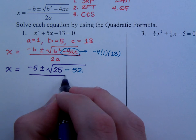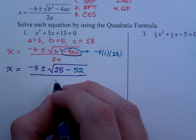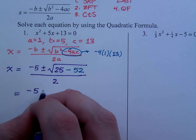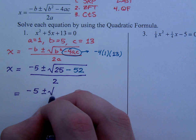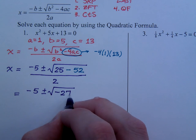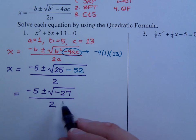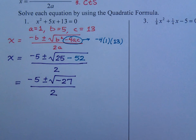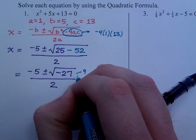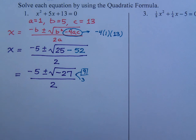And then this is all over 2a, so a is 1, so 2a is 2. And the rest of the quadratic formula is all about simplifying, that's all you can do. 25 minus 52 is negative 27. And then you want to see if you can simplify or reduce this radical. Now, as you look at this, this guy breaks down as 9 times 3, so there is your square.